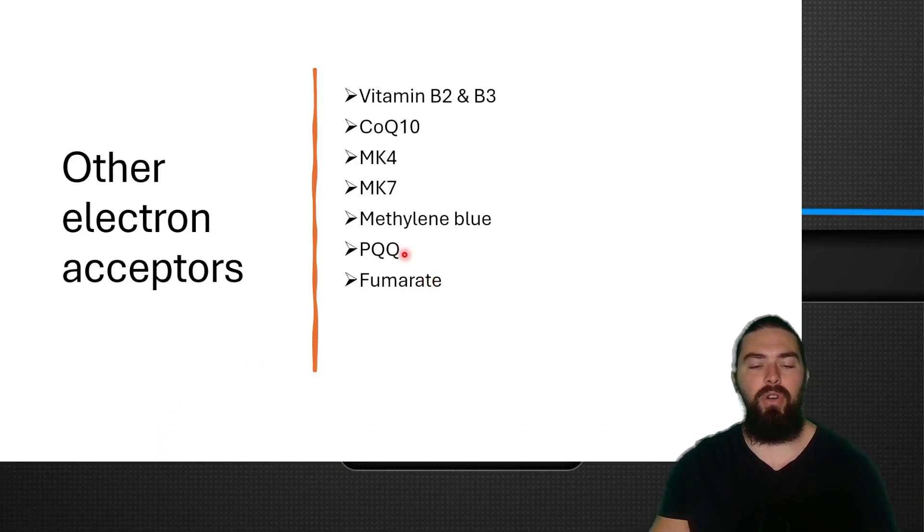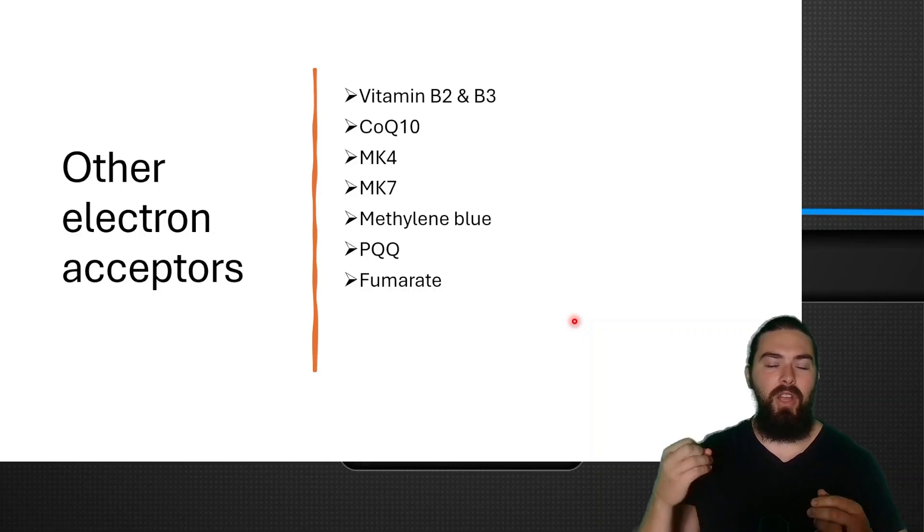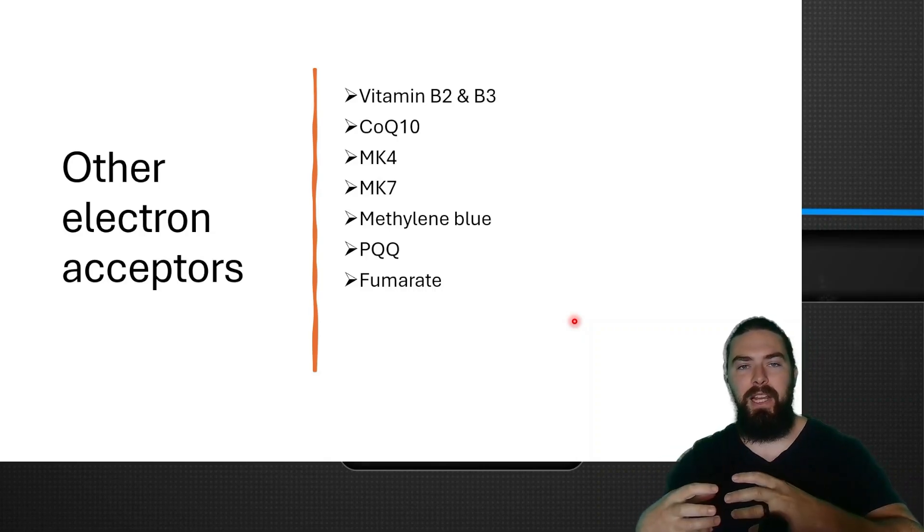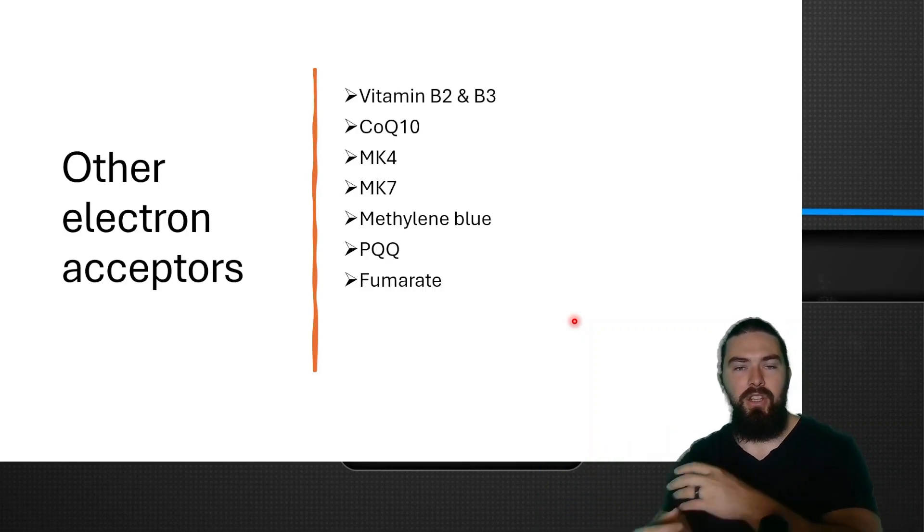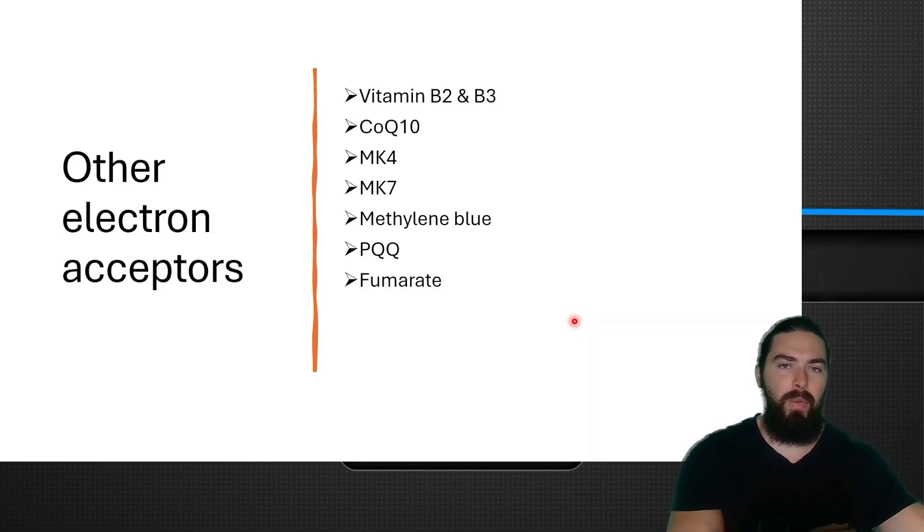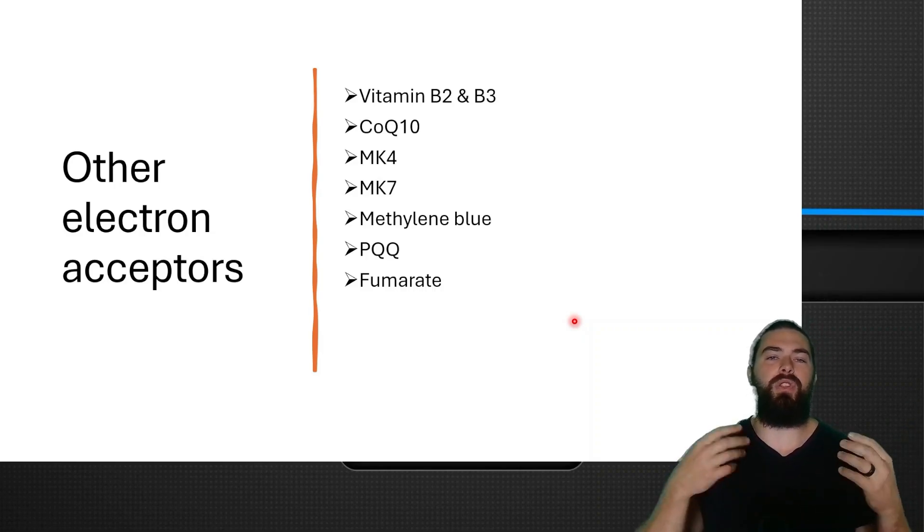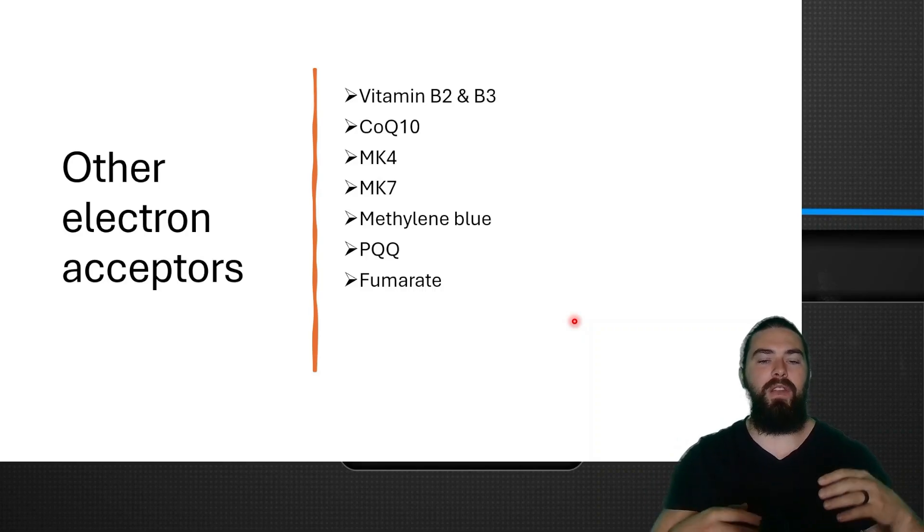Now, quick word here on these electron acceptors. It depends where they accumulate in the cell. If they accumulate in the mitochondria, they are not close to 5-alpha reductase. So they then accept electrons from other things, not NADPH, which is then necessary for 5-alpha reductase. So it's all about the proximity.